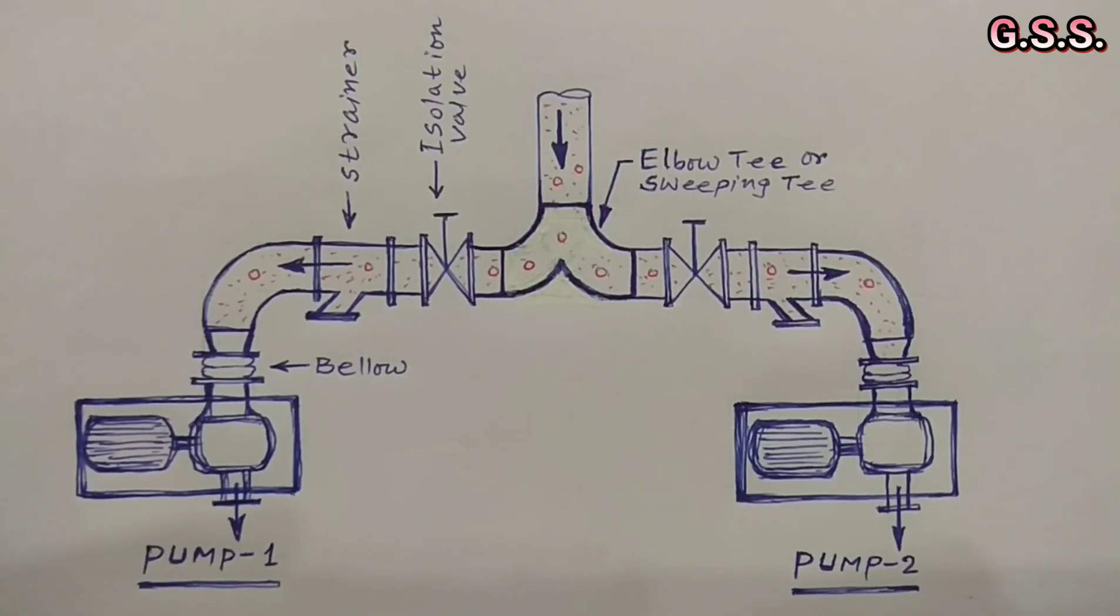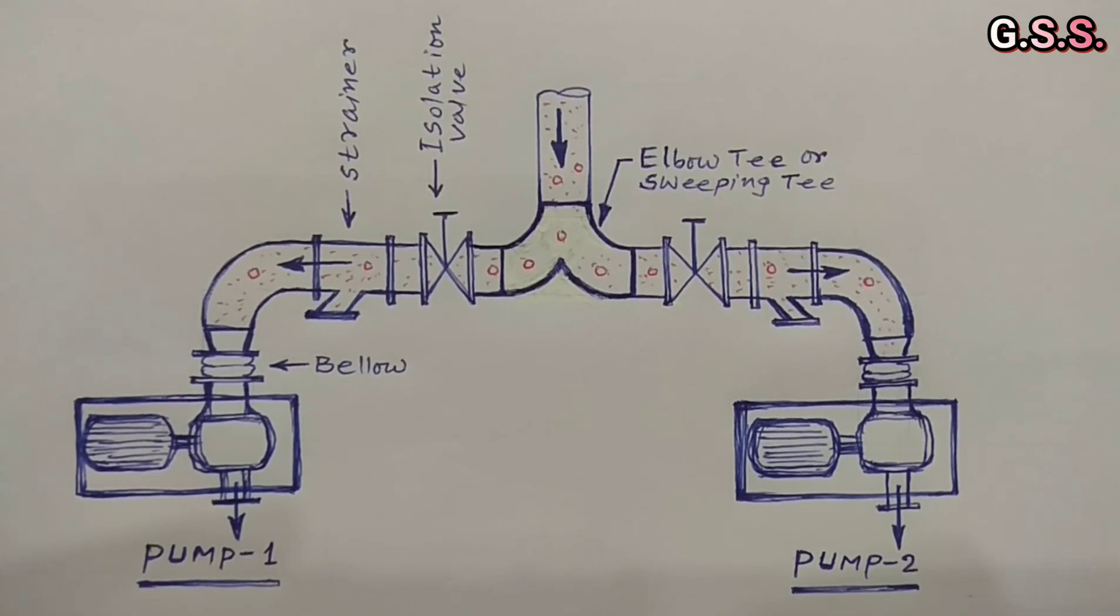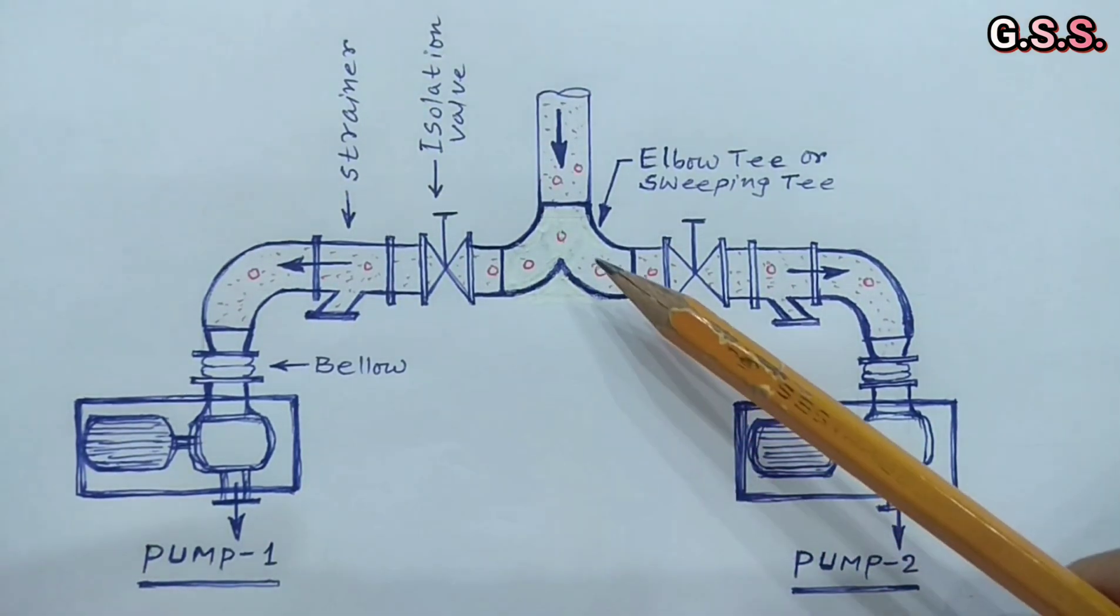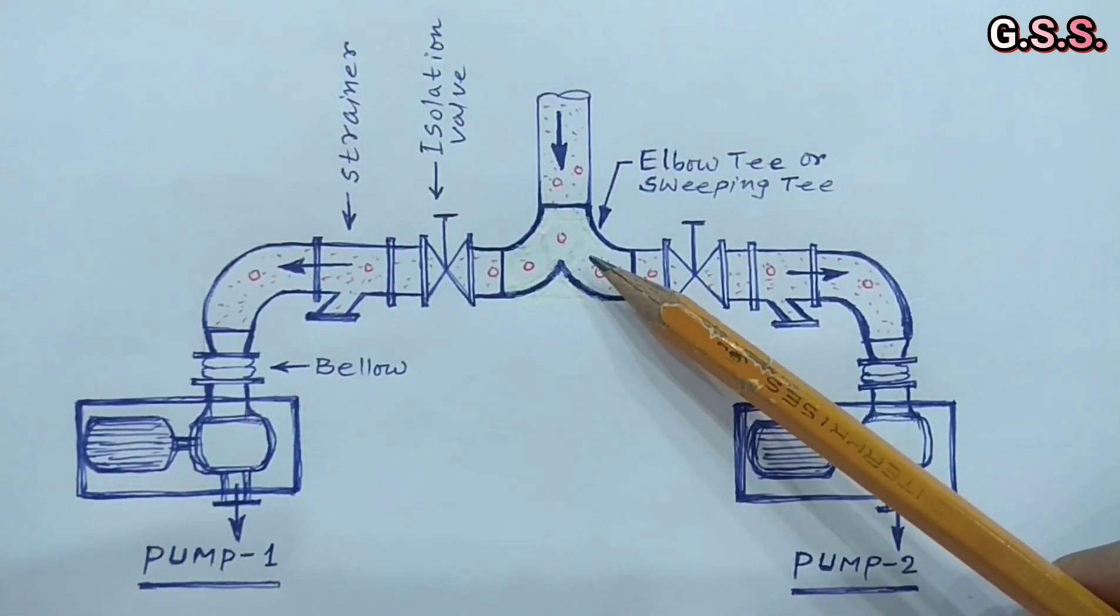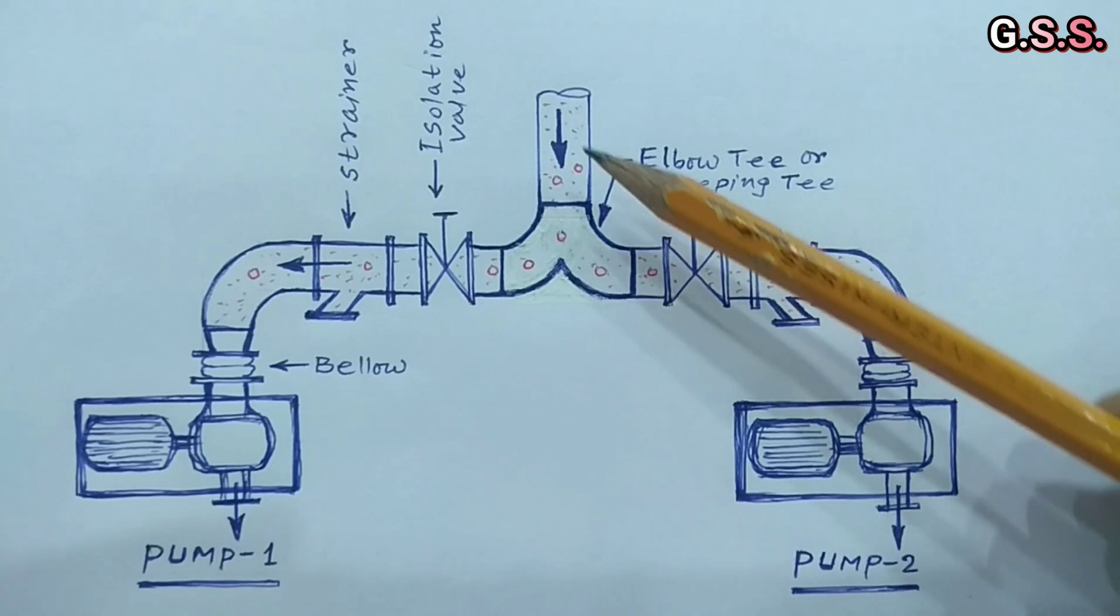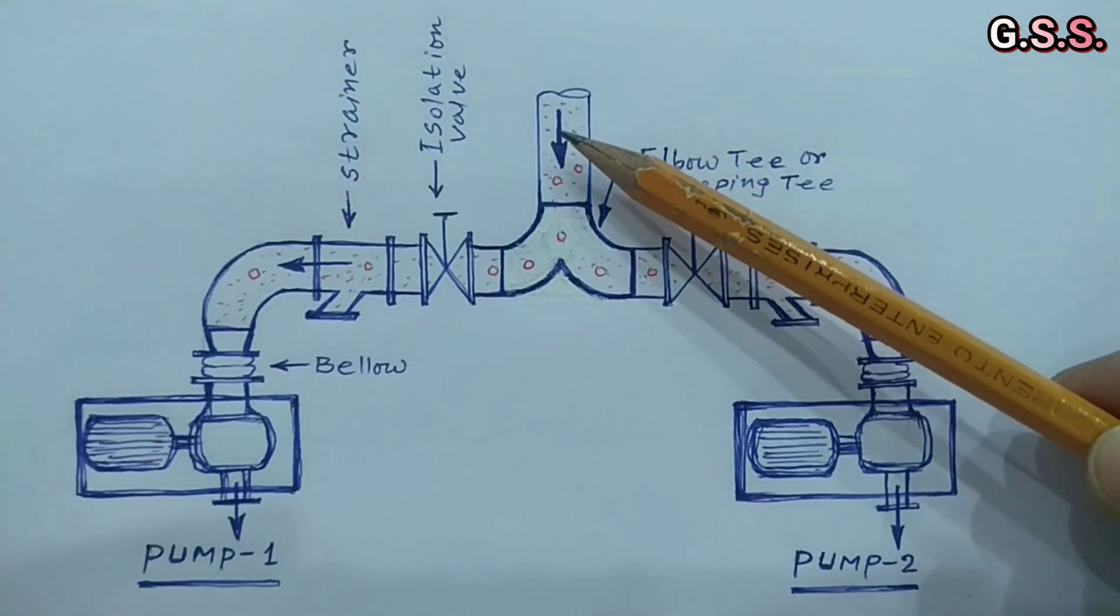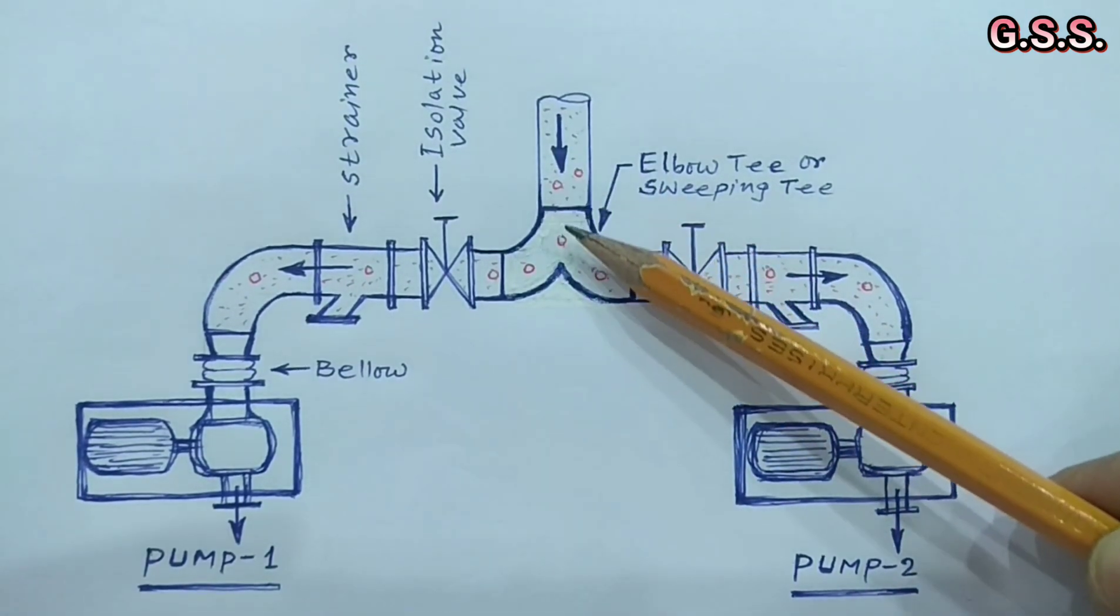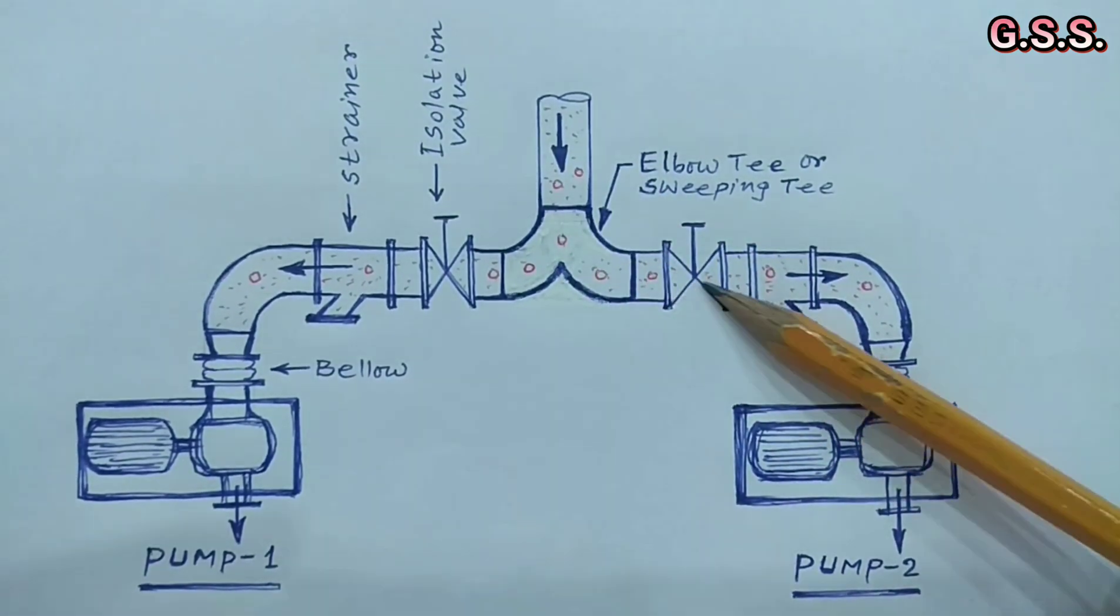Now this is the sketch of earlier pump suction piping after replacing the straight T by elbow T or sweeping T. Now liquid in suction line will flow smoothly towards any pump and pressure drop will be lesser than earlier.